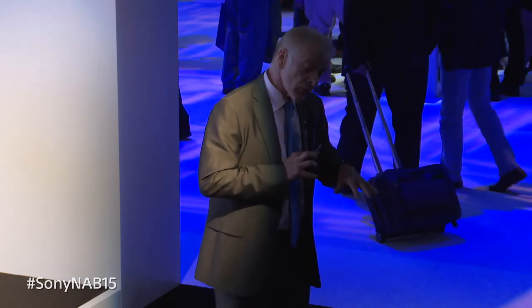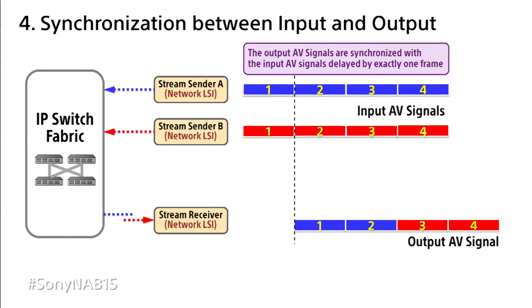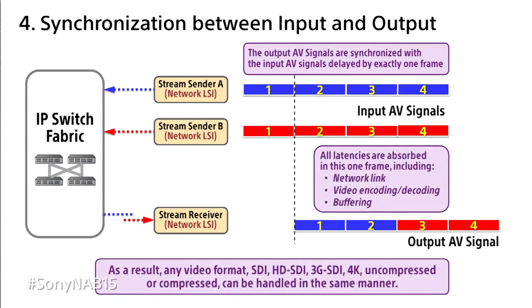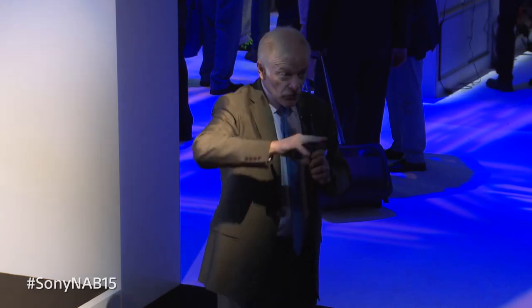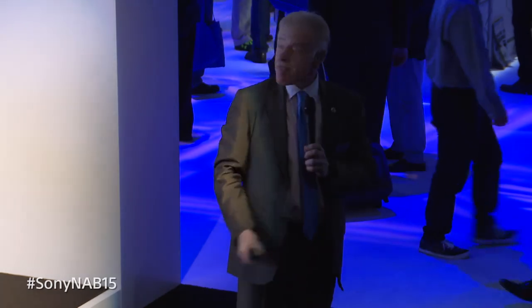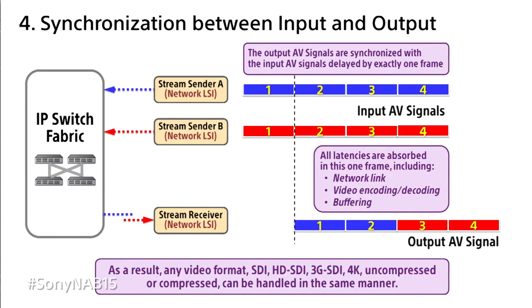IP switches vary — some are fast and expensive, others are slower commodity switches with more latency. We buffer any packet delays through the IP fabric by creating a one-frame delay, allowing us to buffer and resynchronize all video within that one-frame window. This approach supports SDI, HD-SDI, 4K, and all the way up to 8K transmission over IP.